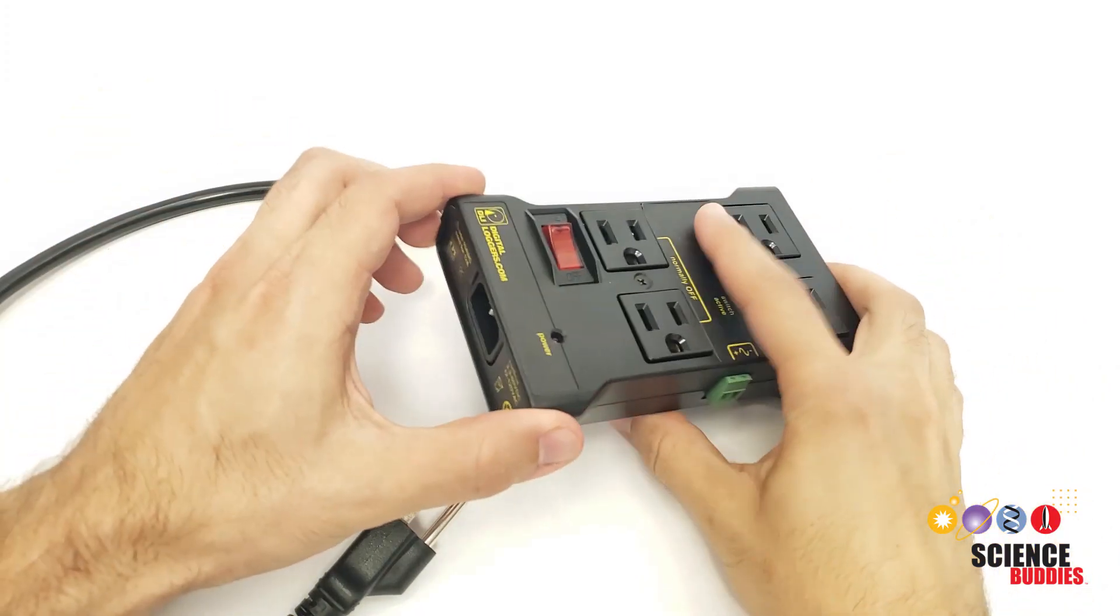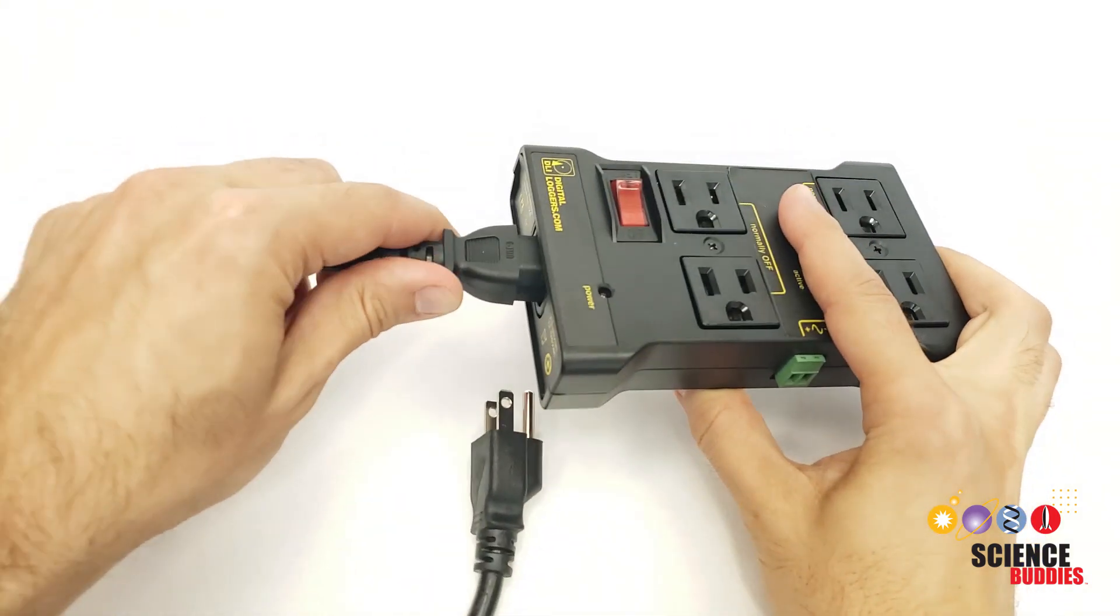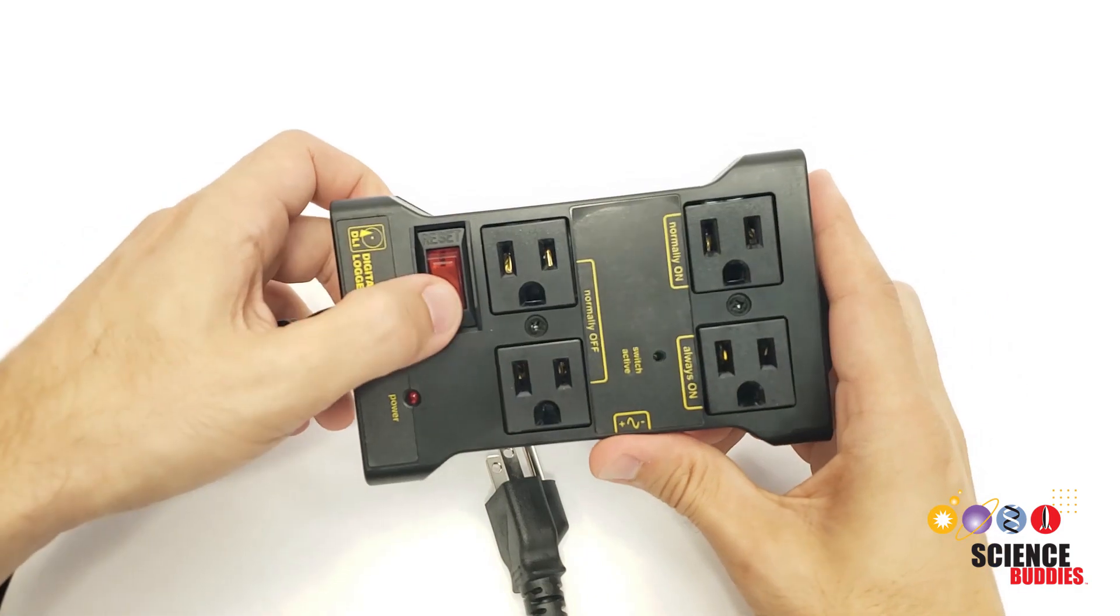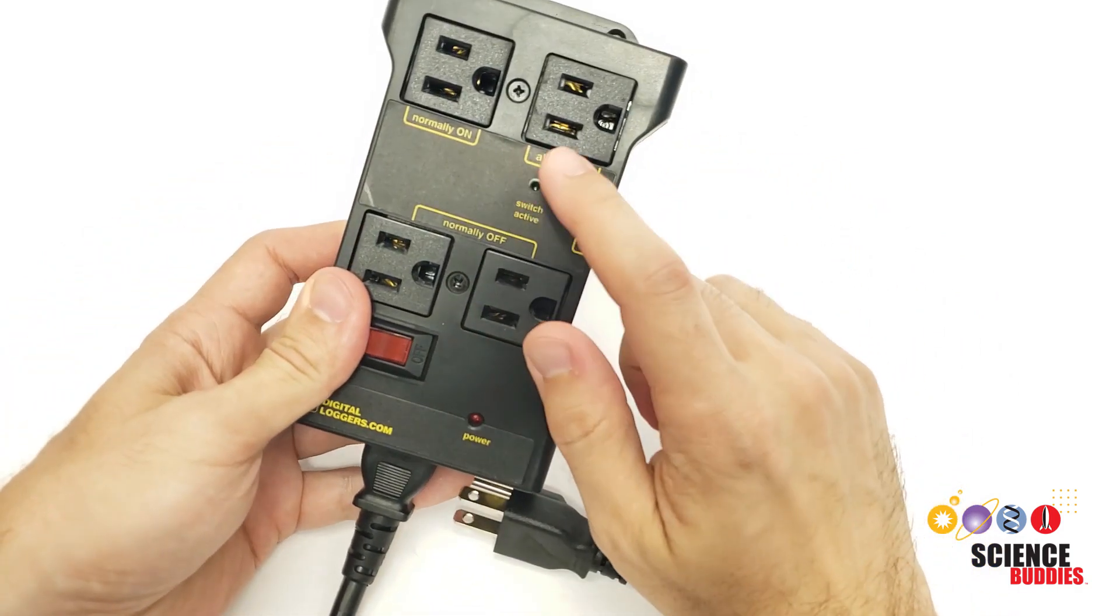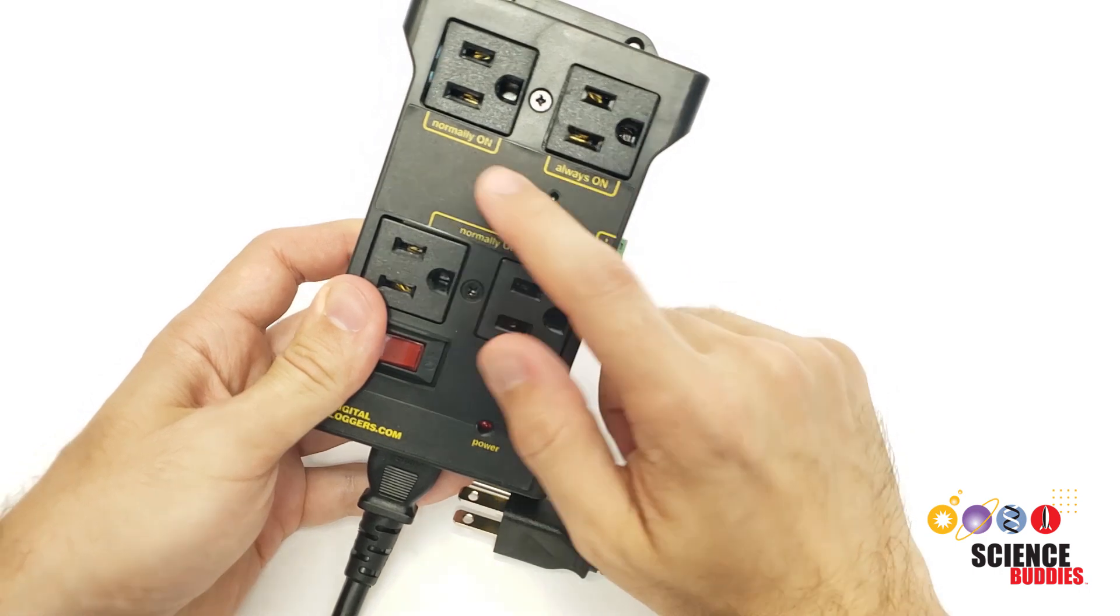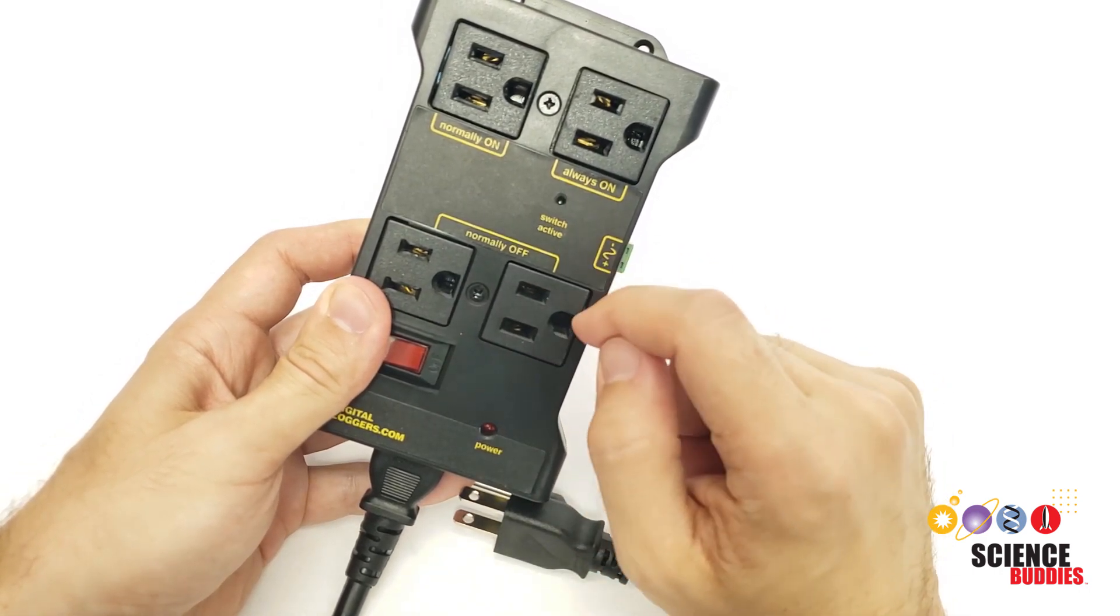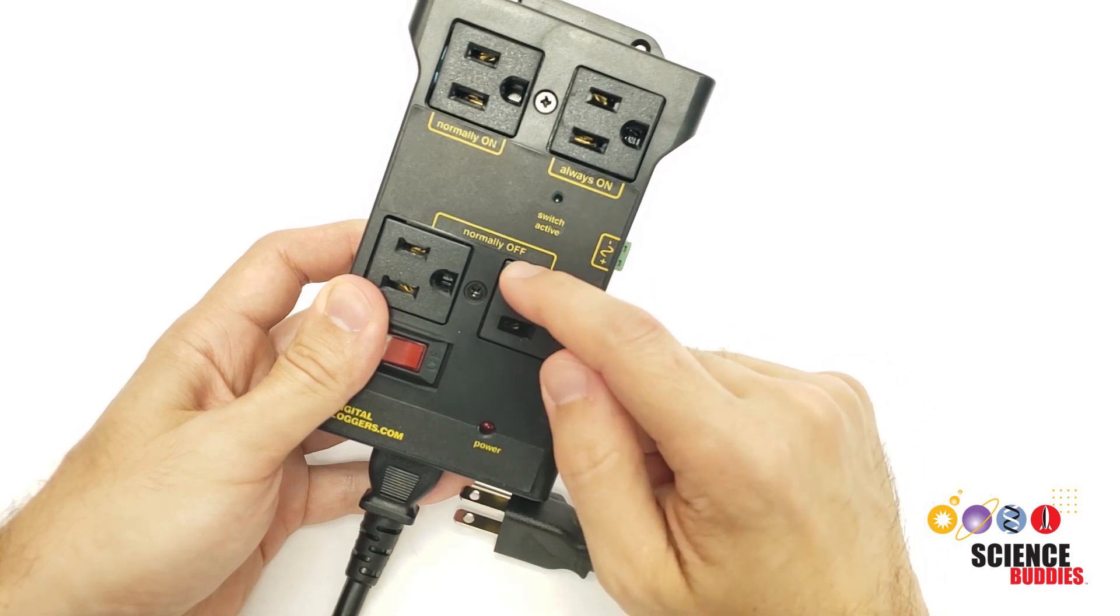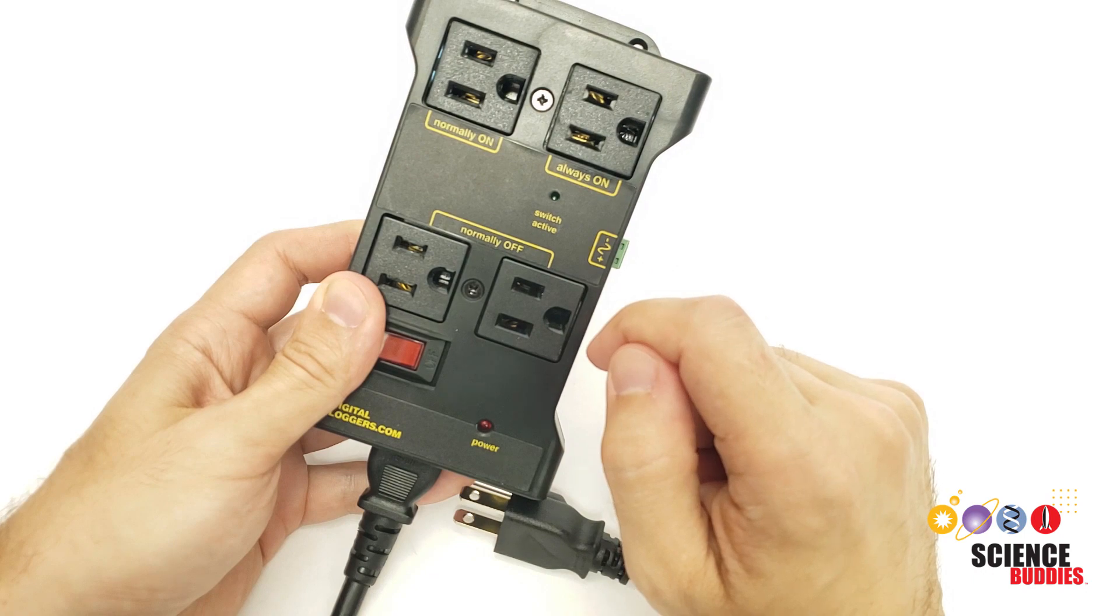Let's take a look at the device. It comes with a rather short power cord that you can plug in here, although you can use a longer one if you need more reach. Here is the off and reset switch and it comes with four outlets. One of which is always on, one of which is normally on and will turn off when it receives a high signal from your microcontroller, and two of which are normally off and will turn on when they receive the high signal from your microcontroller.